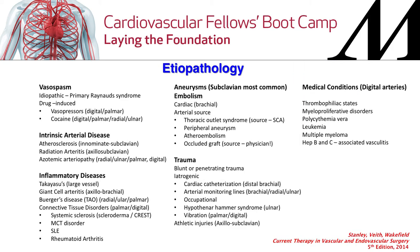Upper extremity ischemia affects younger persons more than older when symptomatic. The etiology list is extensive: vasospasm, intrinsic arterial disease, inflammatory disease, aneurysmal disease, trauma, and medical conditions affecting digital arteries such as thrombophilia and polycythemia. These small vessel disease etiologies cannot be addressed surgically or interventionally.